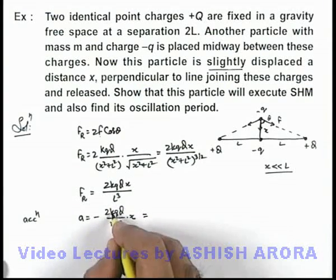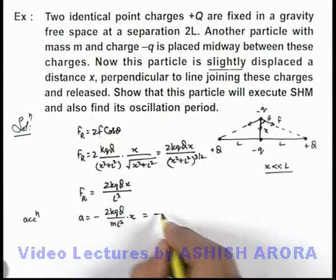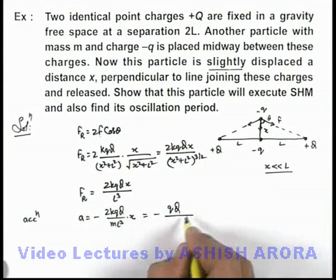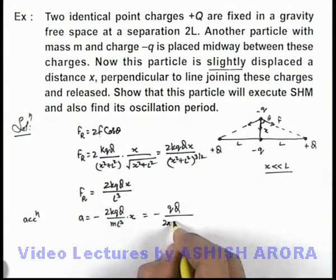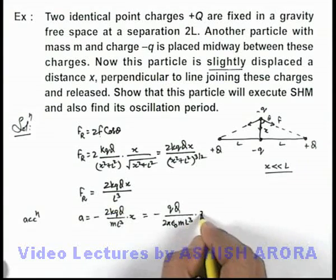If we put the value of k as 1/(4πε₀), this becomes -Qq/(2πε₀mL³) times x.